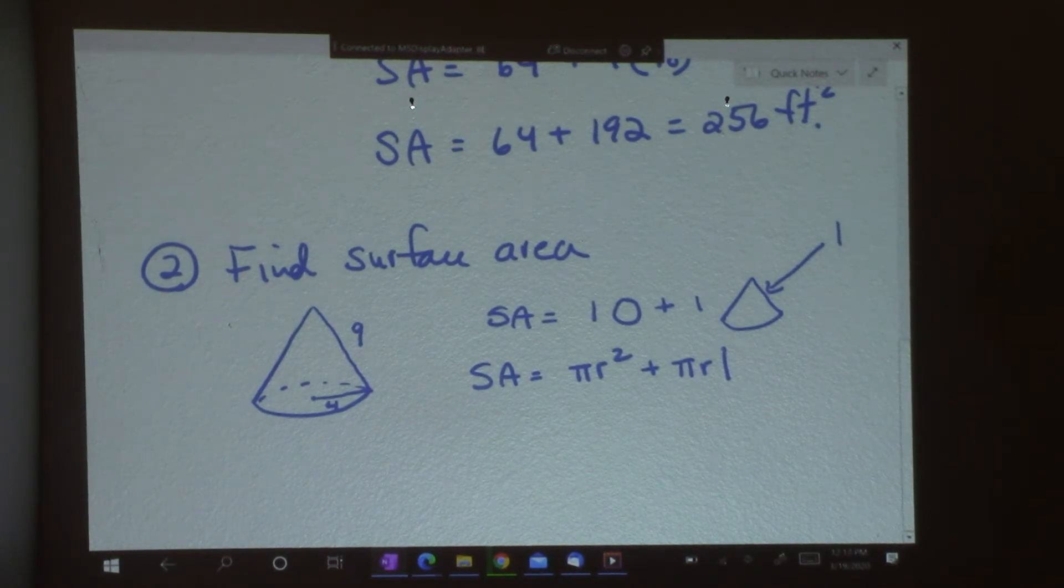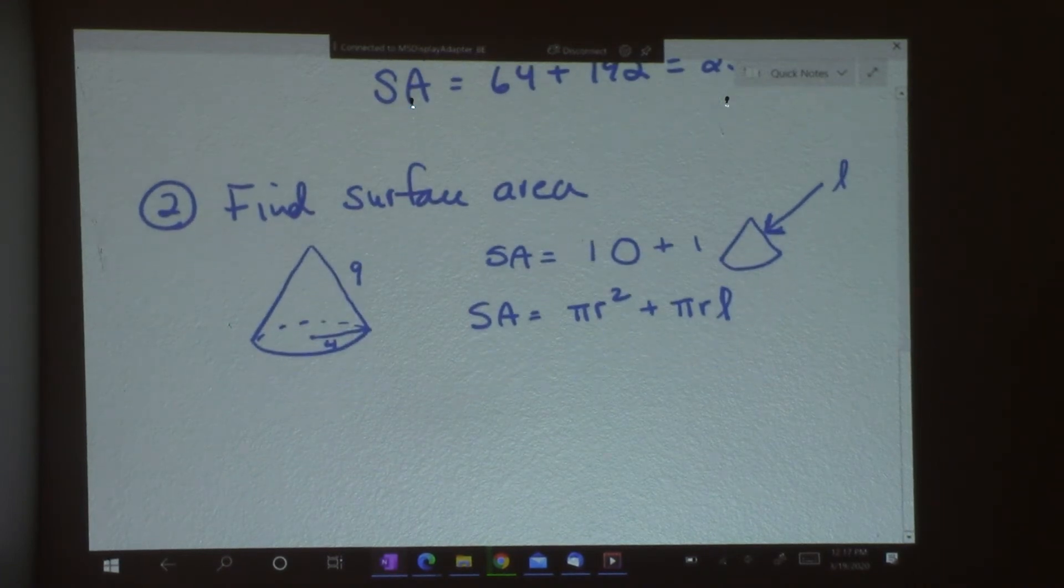Now that just looks like a stick. So I'm going to make it into a cursive l. And they do that in the book sometimes. So we'll do it like this. It's this slanted length right there. Okay. So surface area.